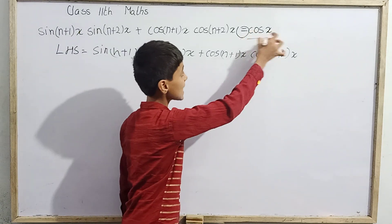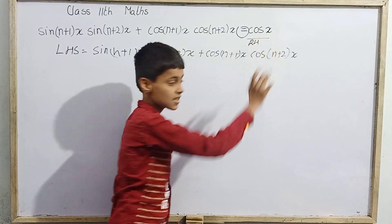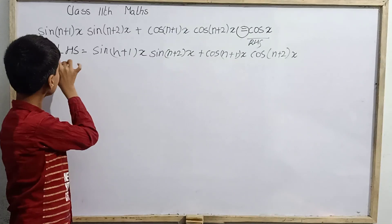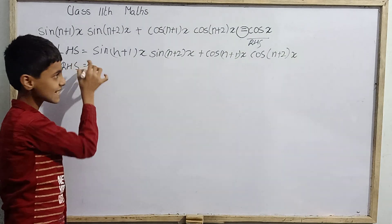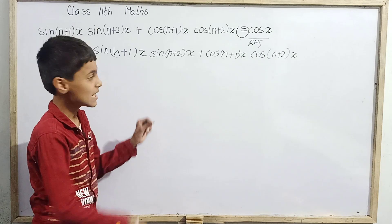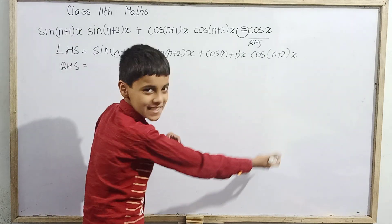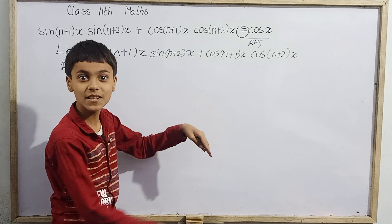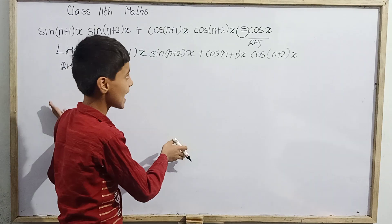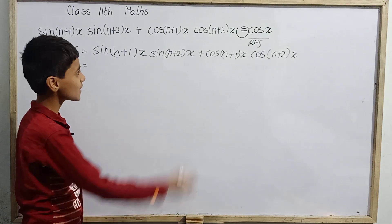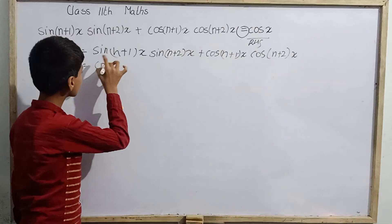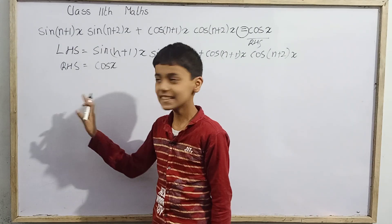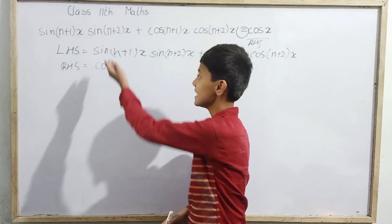And cos x is our RHS — the right hand side is just towards the right of the equality symbol, and the left hand side is just towards the left. So the right hand side is cos x. After that we have to prove that LHS equals RHS.